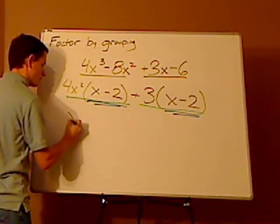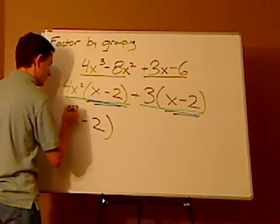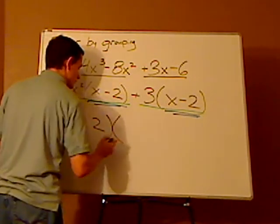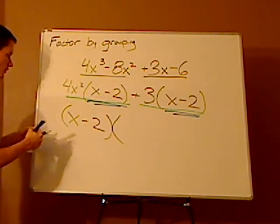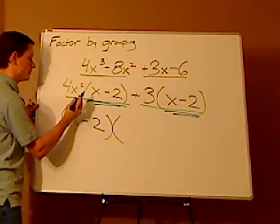Now, the x minus 2 is the GCF, so that comes out on the outside. What's left is what's left on the outside parentheses.